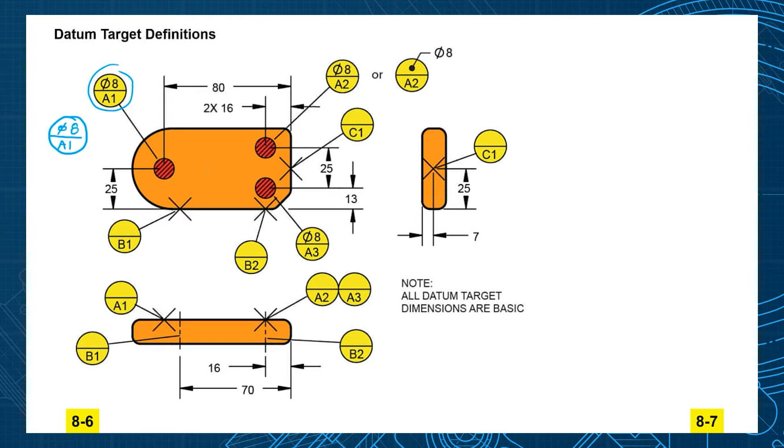It would be the A plane target number one, and then we have A plane target number two, A plane target number three. So those three points will establish that perfect plane on the high points.